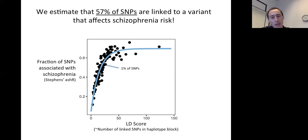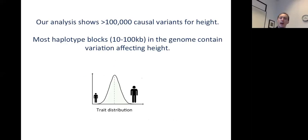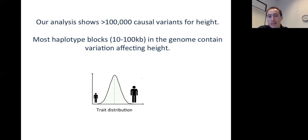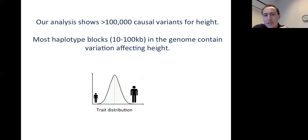Remarkably, a really large fraction of the genome is close to a variant with a non-zero effect on schizophrenia. If the typical size of haplotype blocks is on the order of 10 kb, this suggests roughly half of the 10 kb windows in the genome have an effect on schizophrenia. Most of these effects are very, very small — well beyond our ability to map them at the present time. For height, our analysis shows that there are more than 100,000 causal variants, and most haplotype blocks in the genome contain variation affecting height.